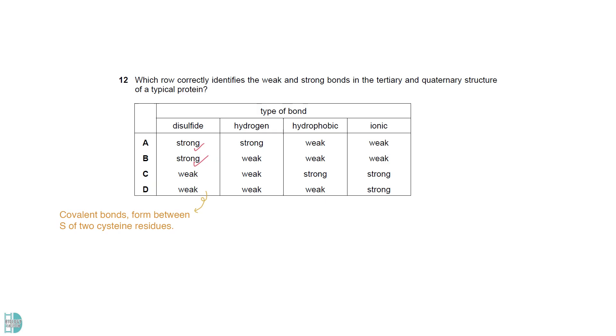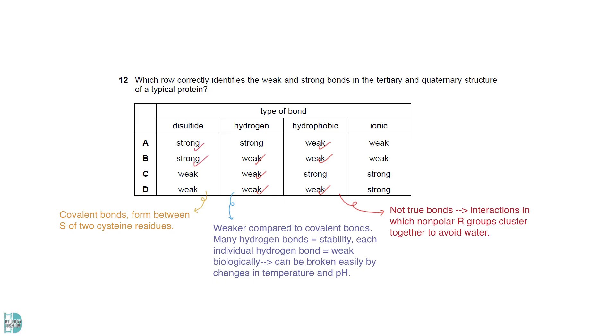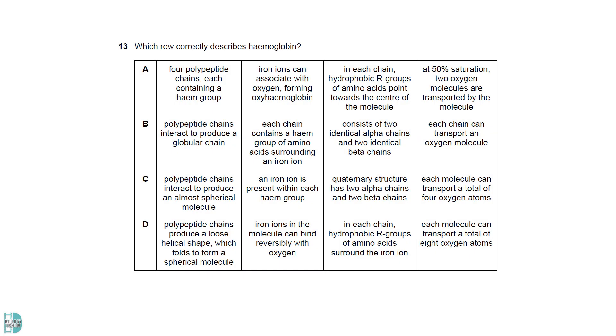Disulfide bonds are strong. These are covalent bonds that form between the sulfur atoms of two cysteine residues. Hydrogen bonds are weaker compared to covalent bonds. While many hydrogen bonds together provide stability, each individual hydrogen bond is relatively weak biologically, because it can be broken easily by changes in temperature and pH. Hydrophobic interactions are weak because they are not true bonds, but rather interactions in which nonpolar R groups cluster together to avoid water. Ionic bonds are weak. They are formed between oppositely charged R groups. They can be disrupted easily by pH change.